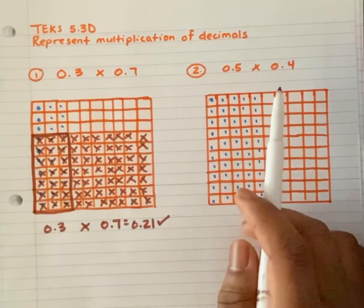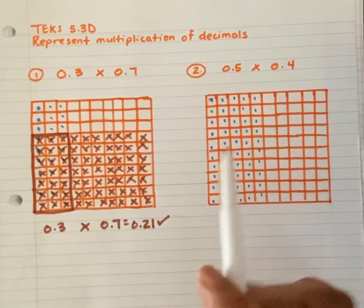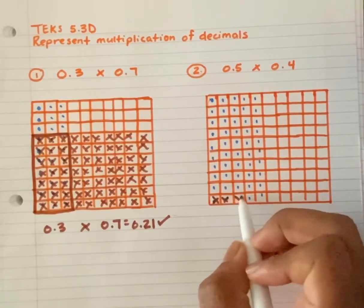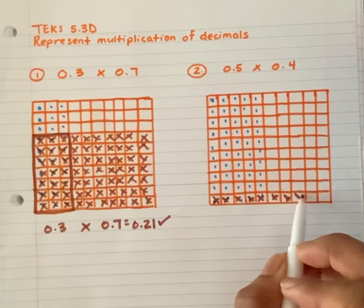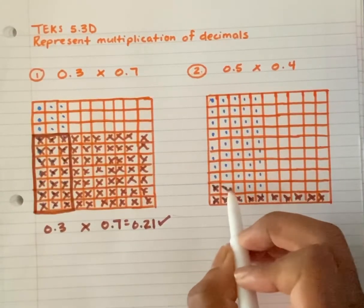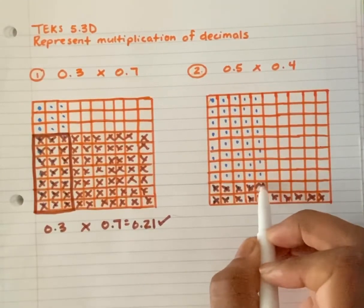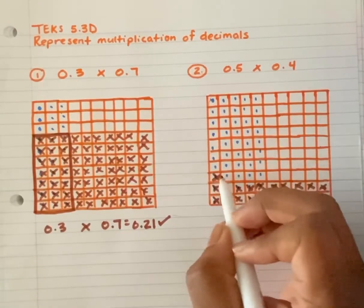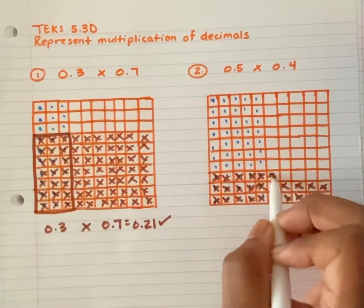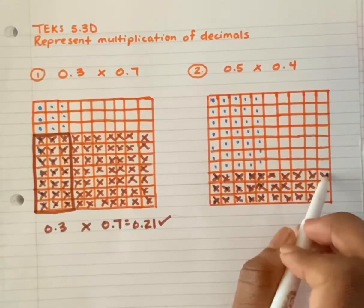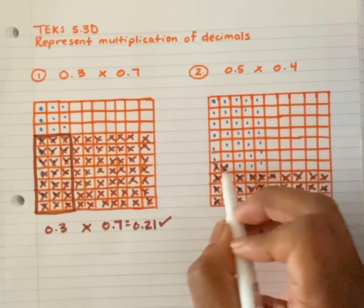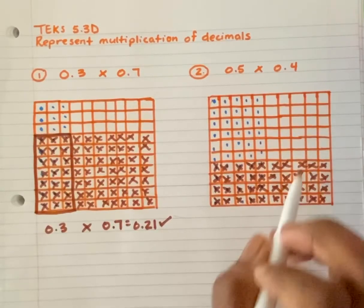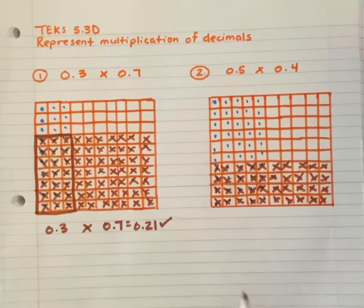Now I'm going to represent my 4 tenths horizontally — I'm going to do X's. I mark out 1 tenth, 2 tenths, 3 tenths, 4 tenths across the grid. Where is my answer? Where is my product?